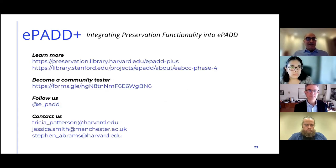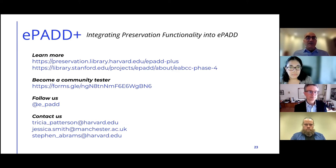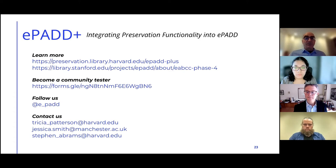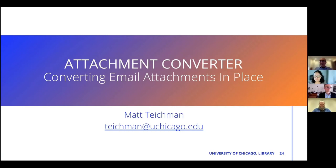For more information, there are pointers to the Harvard and Stanford project websites. If you are interested in becoming a community tester when the beta release comes out, you can register your interest on our Google form. You can also follow us on Twitter for the latest updates, and please feel free to contact project co-leads Tricia Patterson and Jessica Smith, or contact me directly.